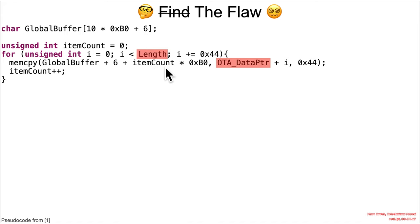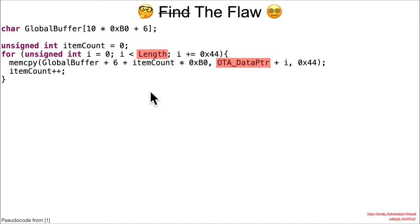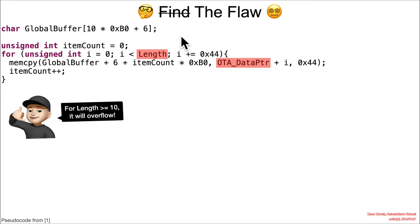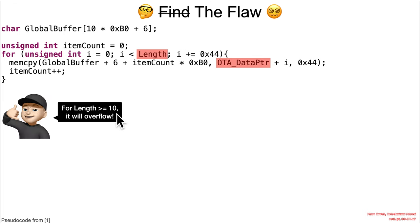Item count is incremented each time through the loop, but the attacker controls the length — they control the exit condition, so they control how many times it goes through the loop. This means that if item count is allowed to get equal to or greater than 10, all of a sudden you're going to be stepping outside of this global buffer.